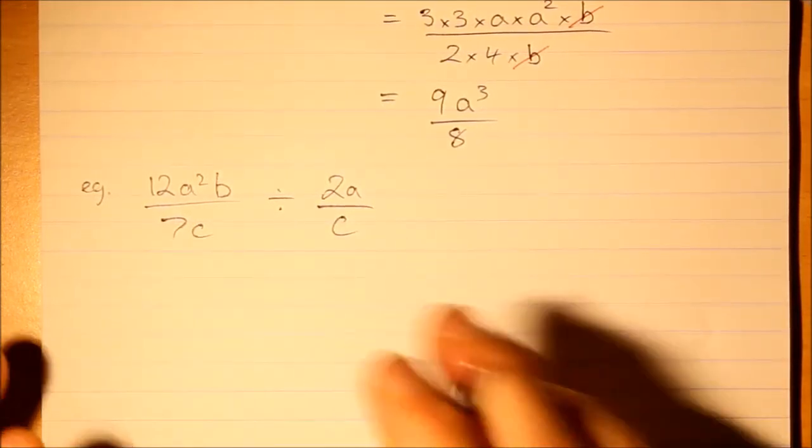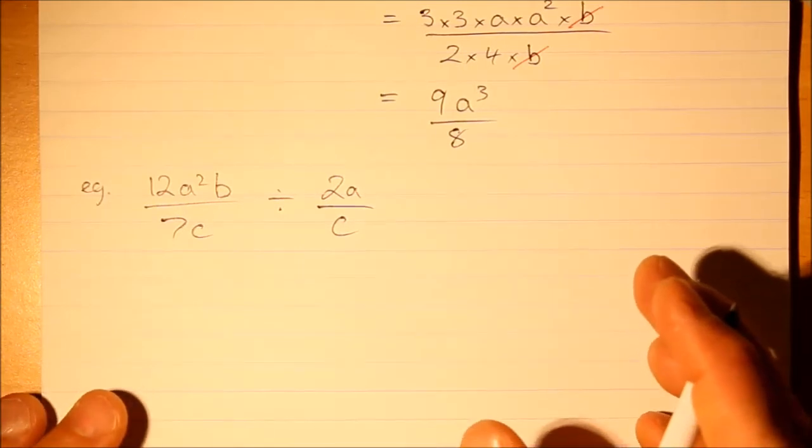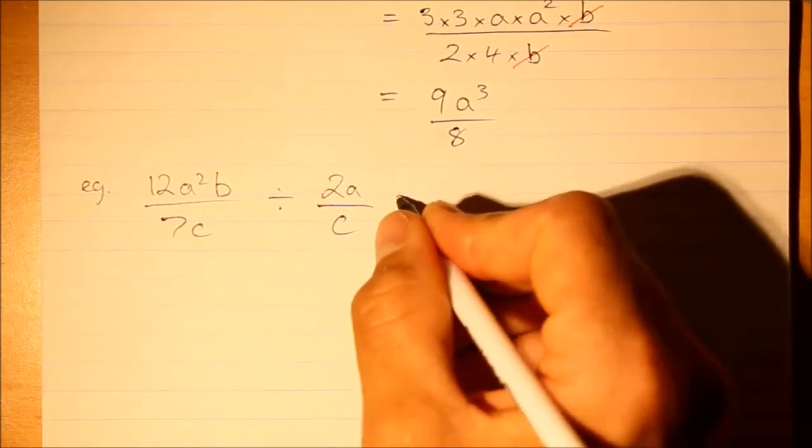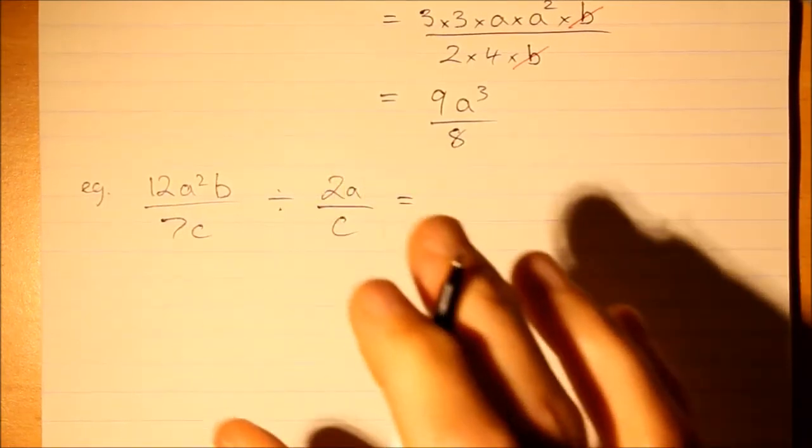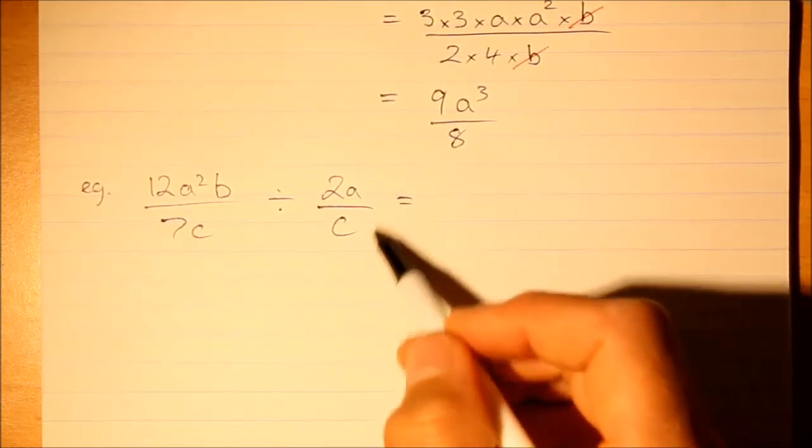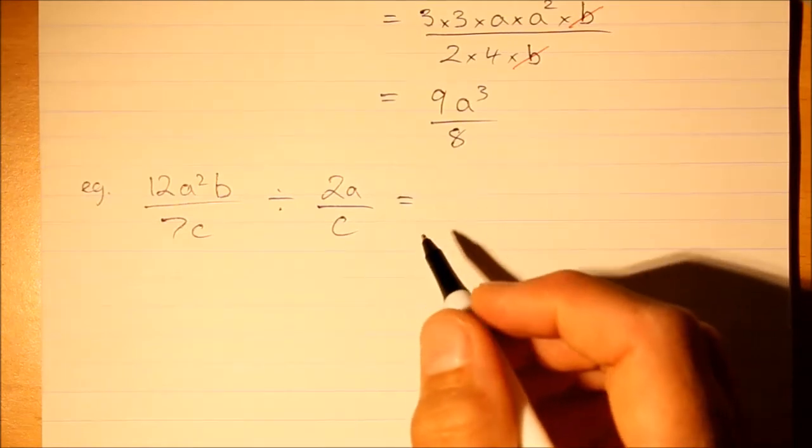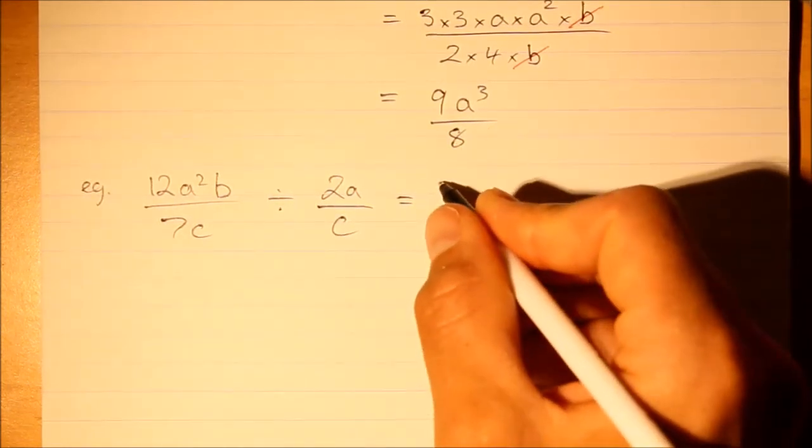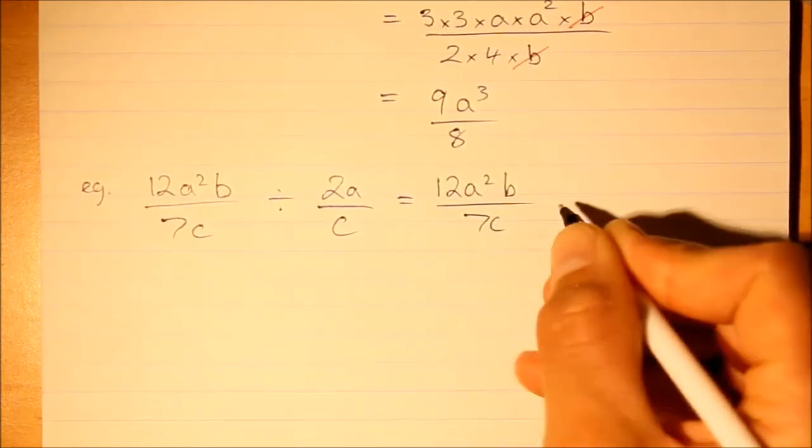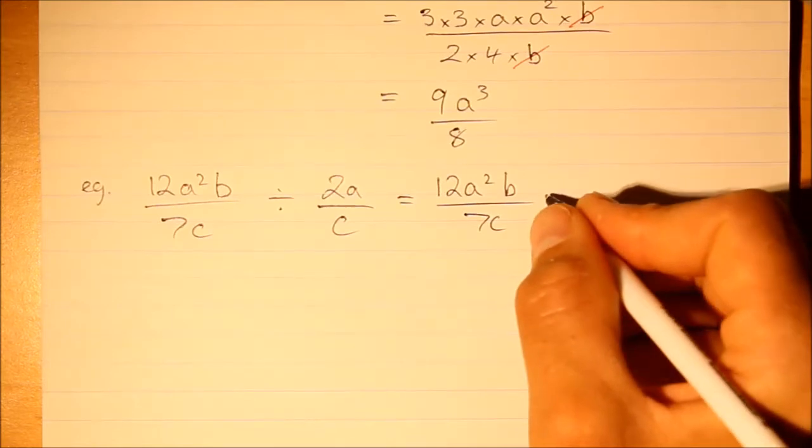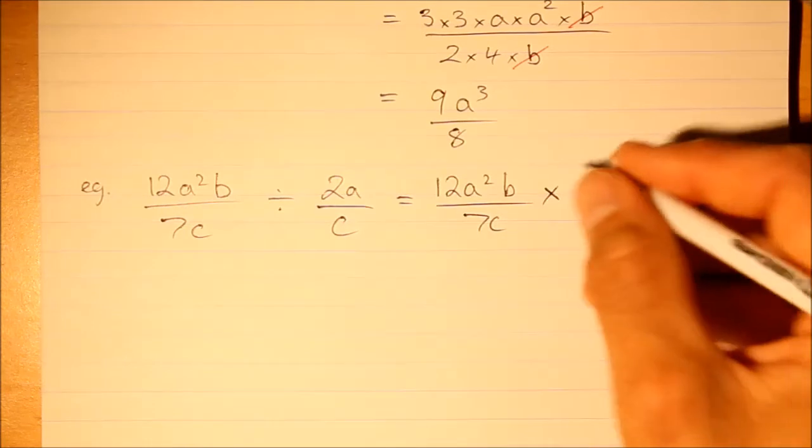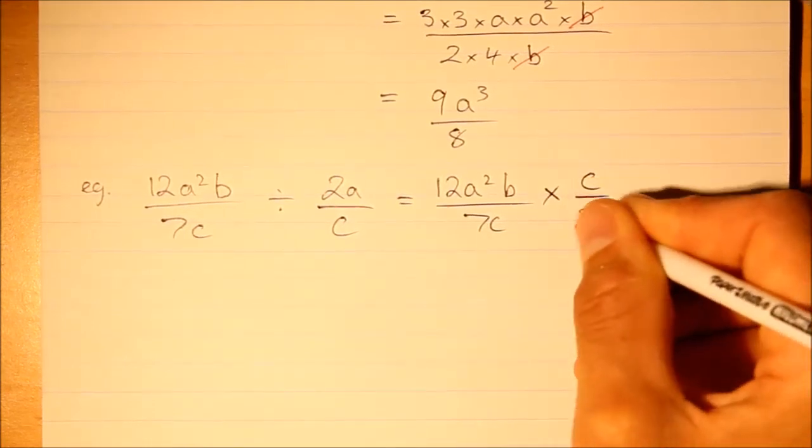Now here we have one fraction divided by another. Let's change it into a multiplication problem. We can change the question to make it a multiplication. All we have to do is reciprocate this fraction on the right. So let's have a look at what that looks like. I'll just rewrite the question. Instead of a division, I'm writing a multiplication, and that is, but I'm reciprocating, I'm flipping it over, c over 2a.